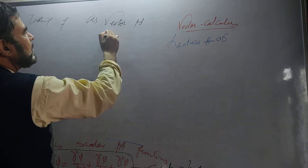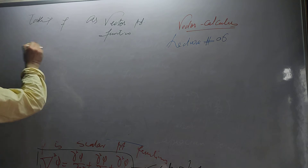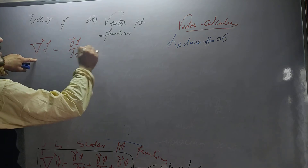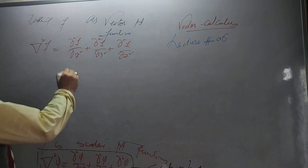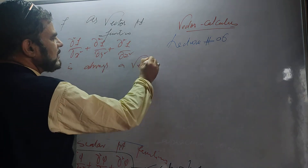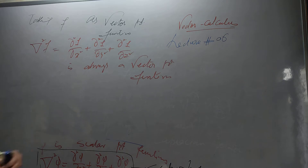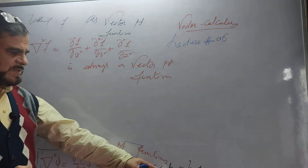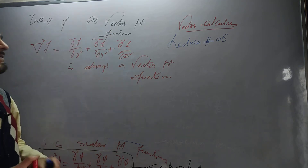When phi is a vector point function f, then the Laplacian delta squared f equals ∂²f/∂x² + ∂²f/∂y² + ∂²f/∂z², and this expression is always a vector point function. So when you operate the Laplacian with a scalar point function you get a scalar, and when you operate it with a vector point function you get a vector.